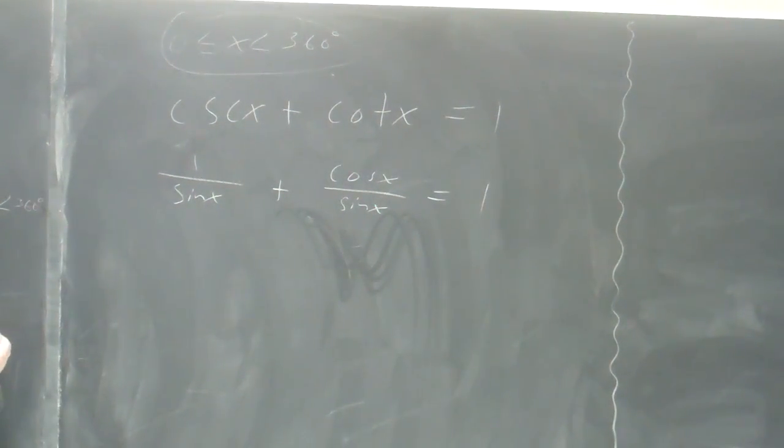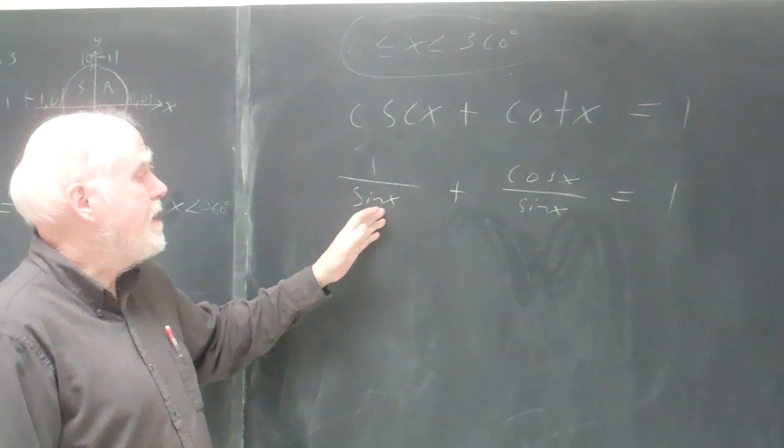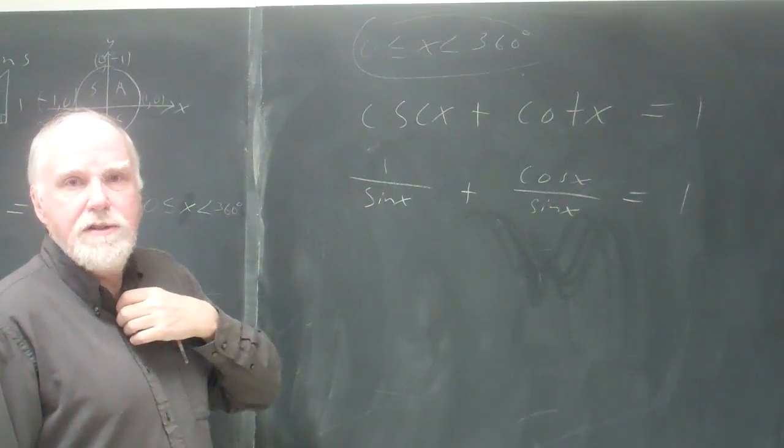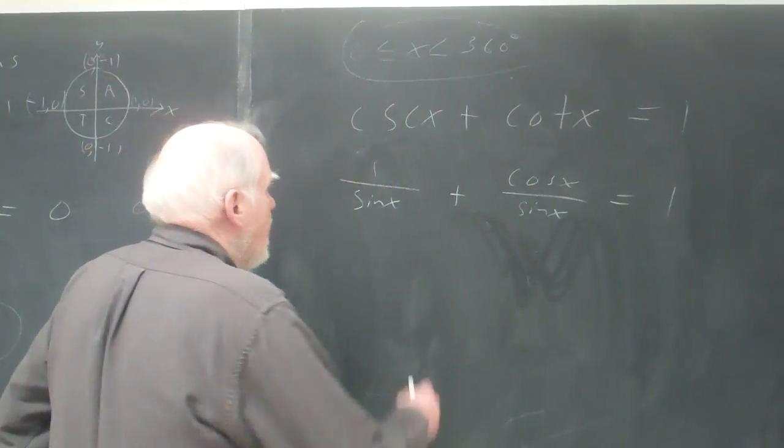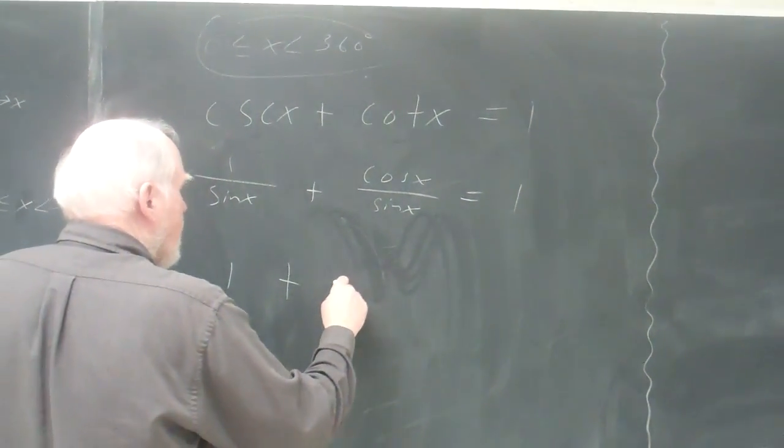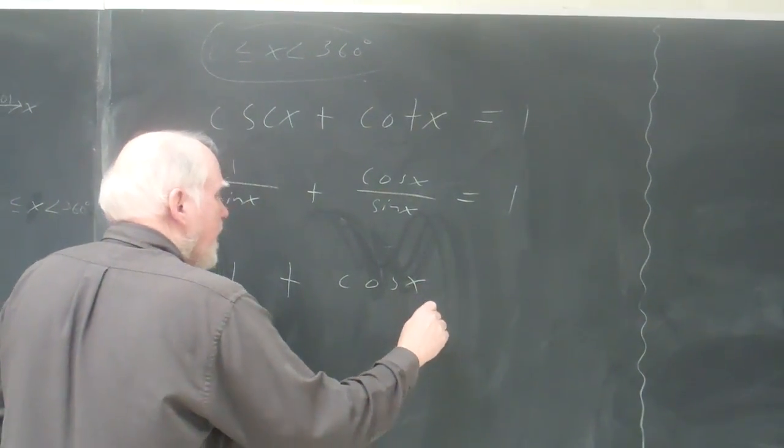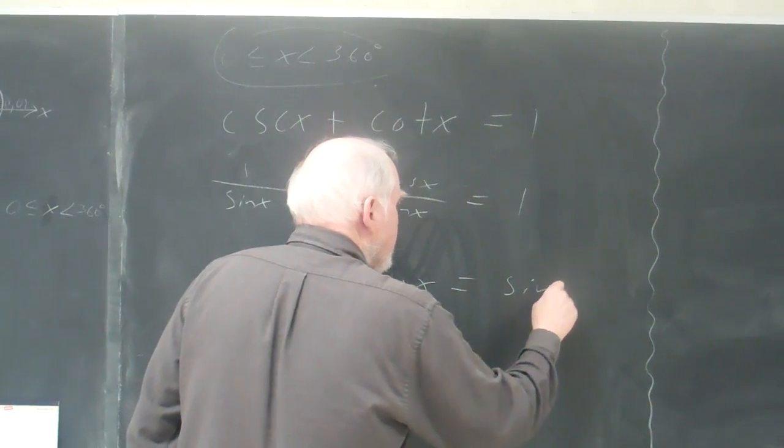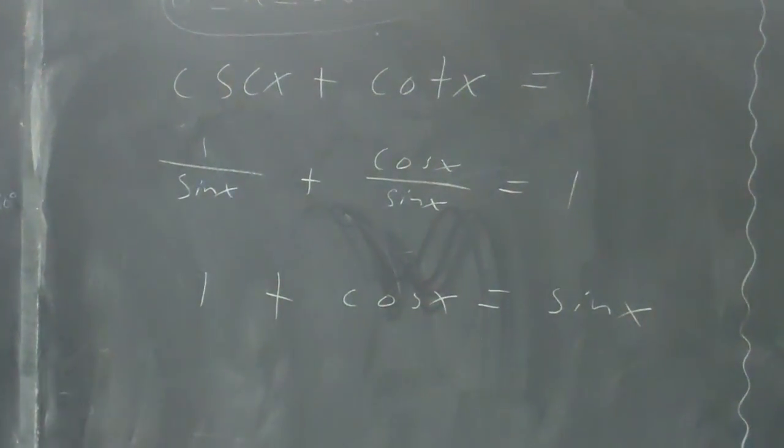But remember, you have to be careful when you do those kinds of things, when you eliminate fractions that way. You're going to have to check your answers at the end. So I'm going to multiply sine x times that, and I will get one plus cosine x equals sine of x. So I've got this situation.